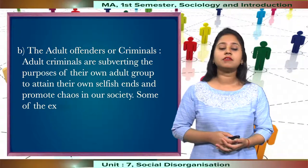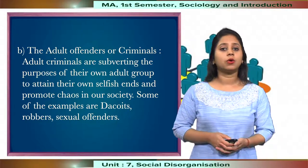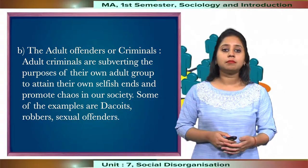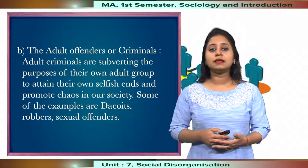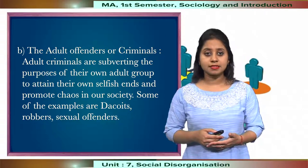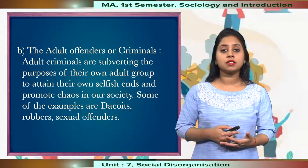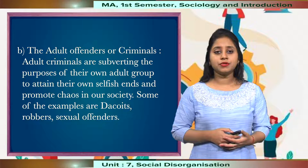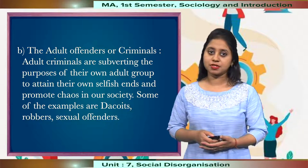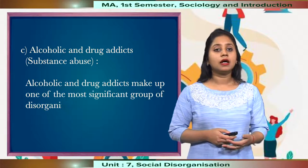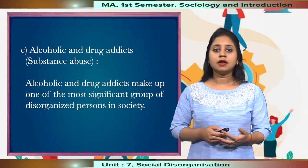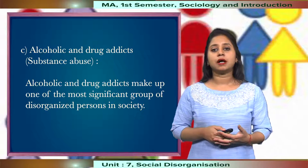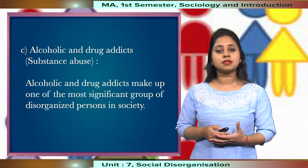Secondly, we have adult offenders or criminals. Adult criminals are subverting the purposes of their own group to attain their own selfish ends and promote chaos in a particular society. Some examples include dacoits, robbers, or sexual offenders. Then we have alcoholics or drug addicts, who make up one of the most significant parts of the disorganised persons in a society.